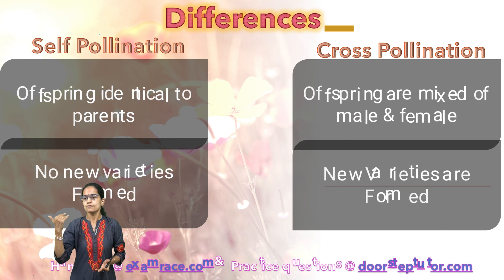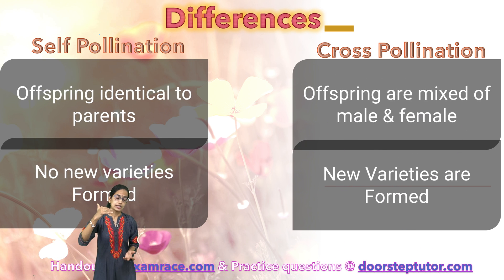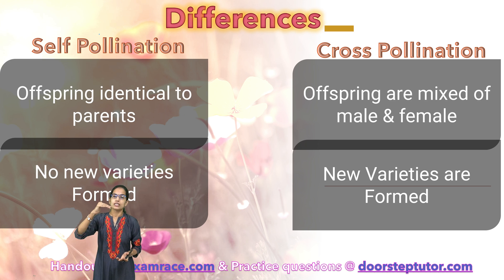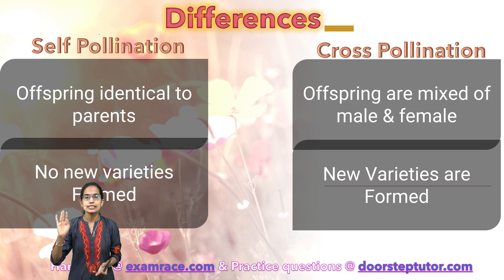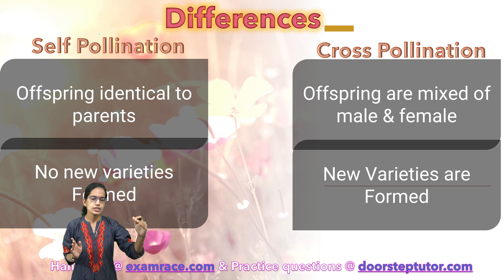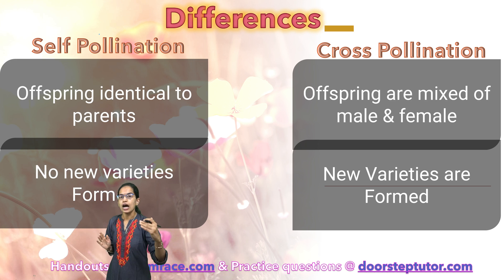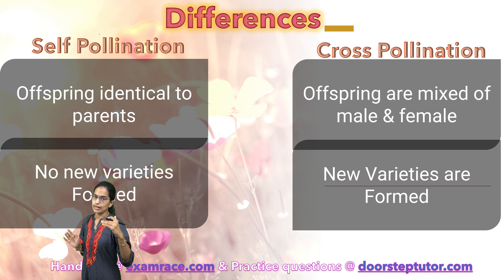The next difference is the offspring. In self-pollination, the offspring are identical — exactly the same as their parents. However, in cross-pollination, the offspring are a mix of the male and female generation.